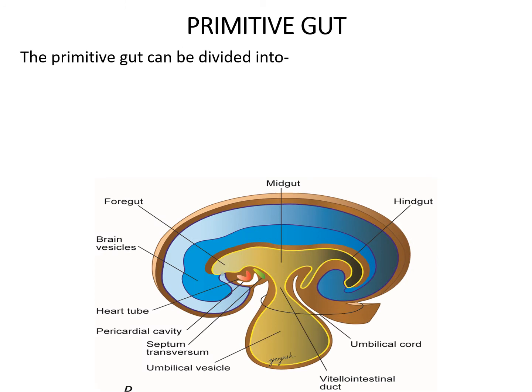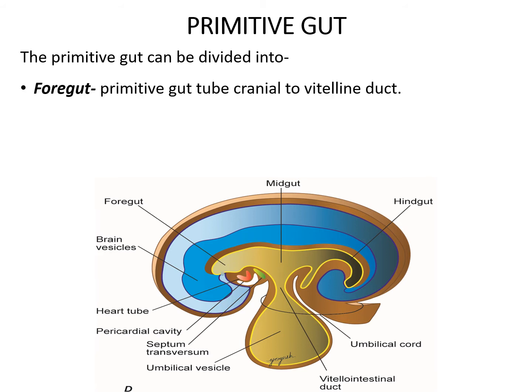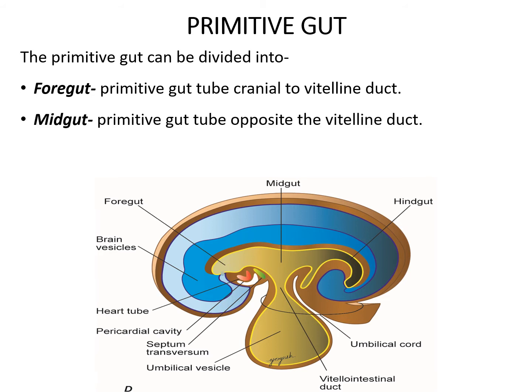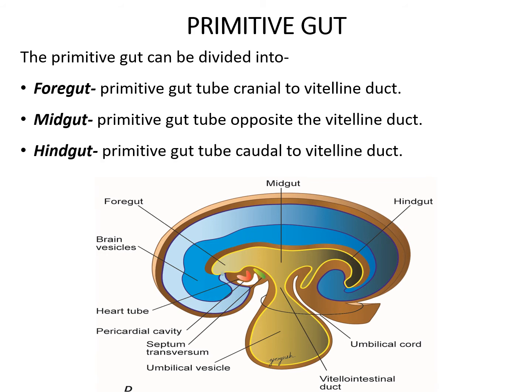The primitive gut tube, which gives rise to most of the gastrointestinal tract, can be subdivided into three parts based on its relation to the vitelline duct. The foregut is the part cranial to the communication with the vitelline duct. The midgut lies opposite to the vitelline duct, and the hindgut is the part of the gut tube caudal to the vitelline duct.